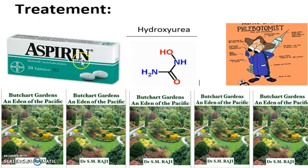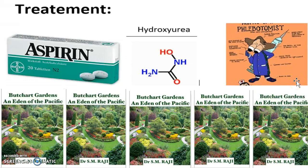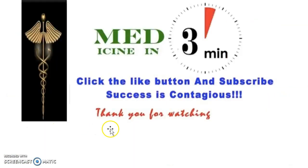Treatment depends on the case. Options include aspirin, hydroxyurea, and phlebotomy — which is when you surgically open the vein and extract the thrombus or blood clot. Not to be confused with a lobotomy (L-O-B-O-T-O-M-Y), which is a brain procedure. That was Medicine in Three Minutes — thank you for watching.